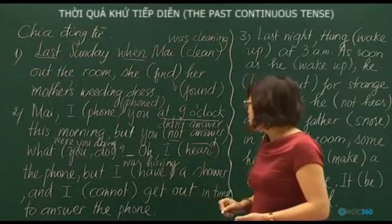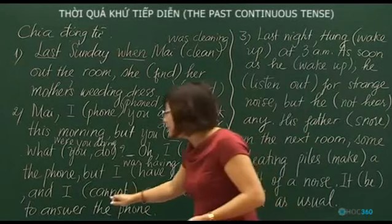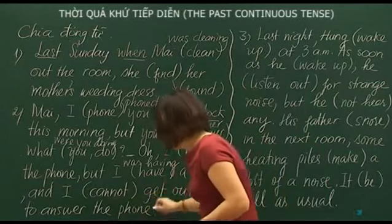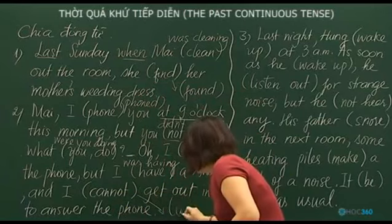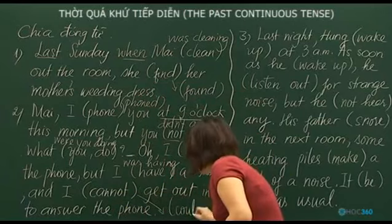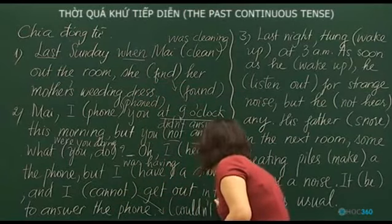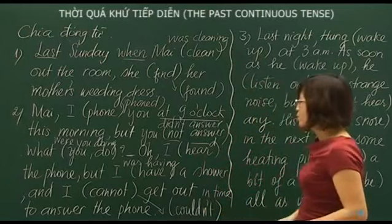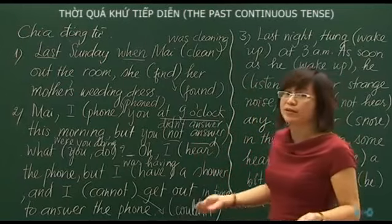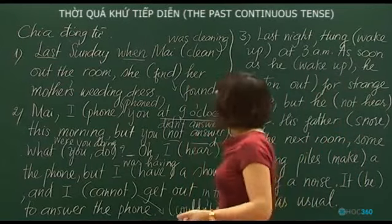'I was having a shower and I could not get out.' We use simple past for 'could not get out': 'could not get out in time to answer the phone.' By the time I came out, the phone had already stopped.